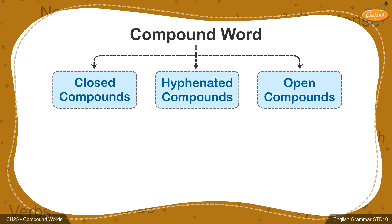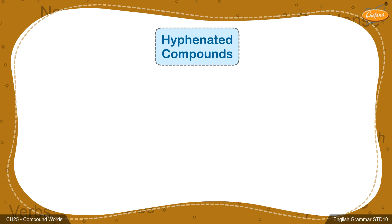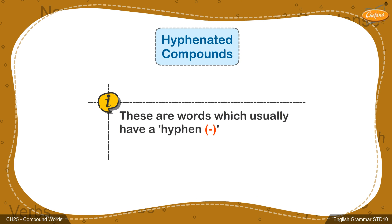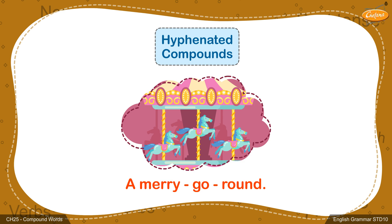The second type of compound words are called hyphenated compounds. These are words which usually have a hyphen. For example, a merry-go-round.